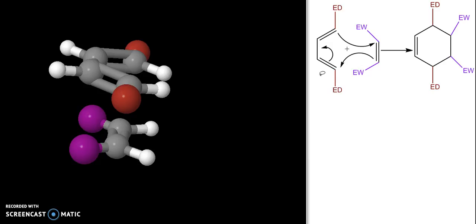Even though we normally draw our reaction like this, this doesn't really represent how the groups approach one another. They approach one another in what's called the endo approach, where the electron withdrawing groups are underneath the diene.